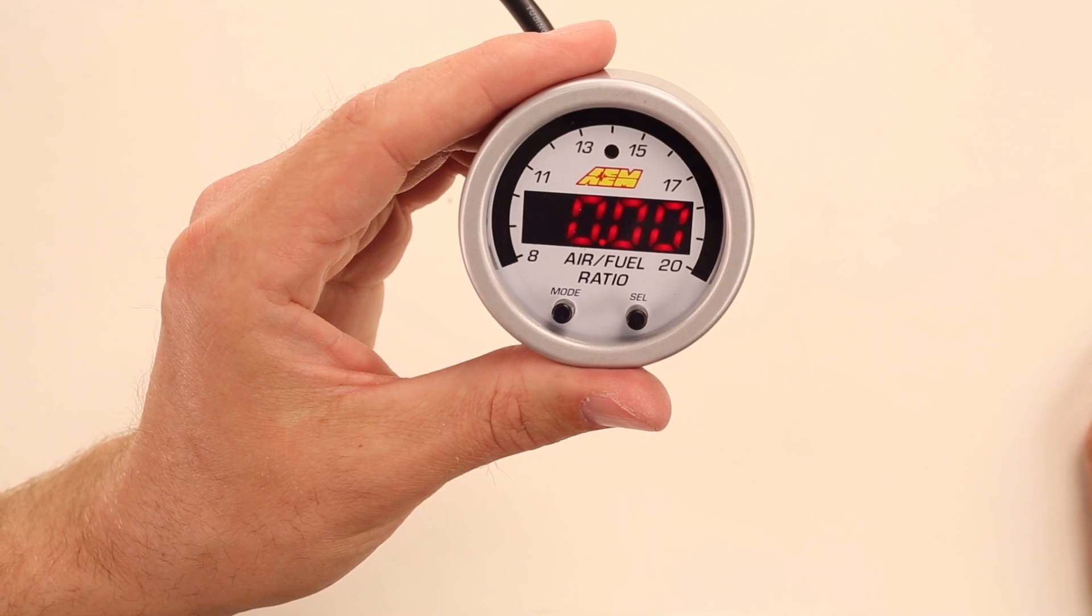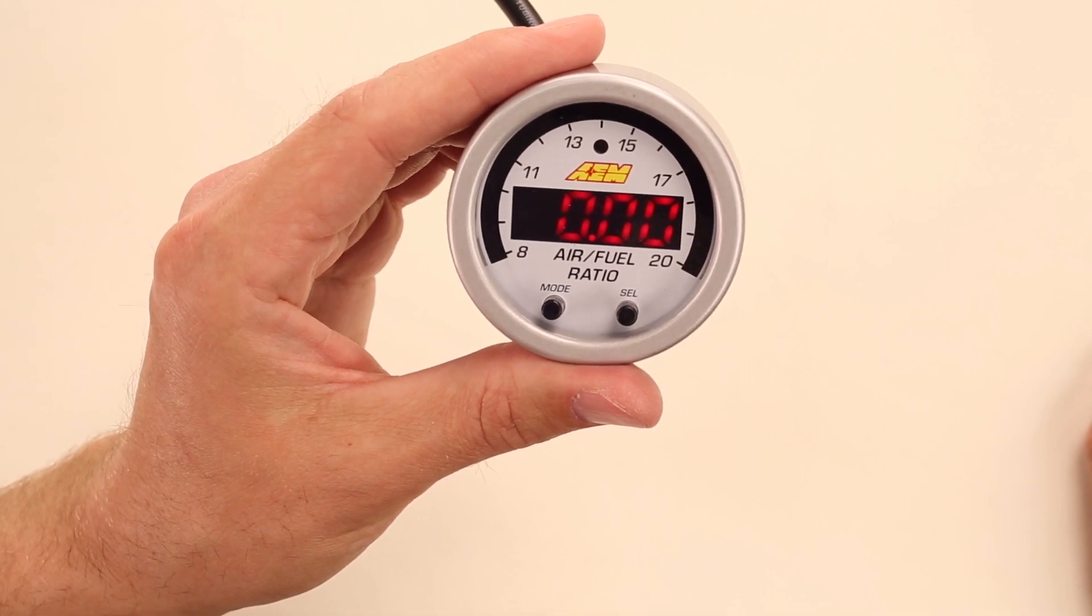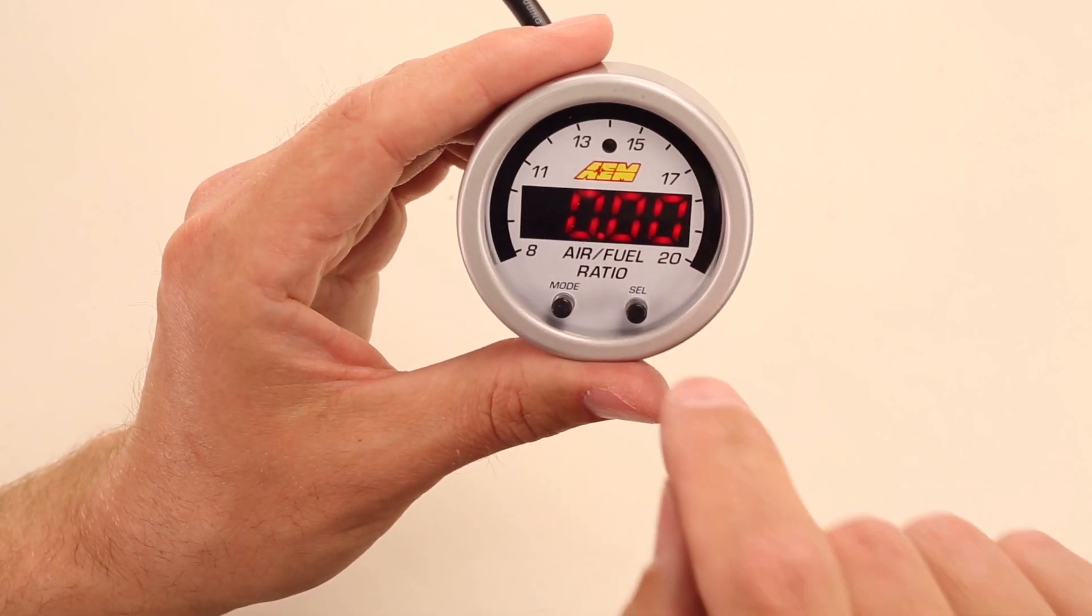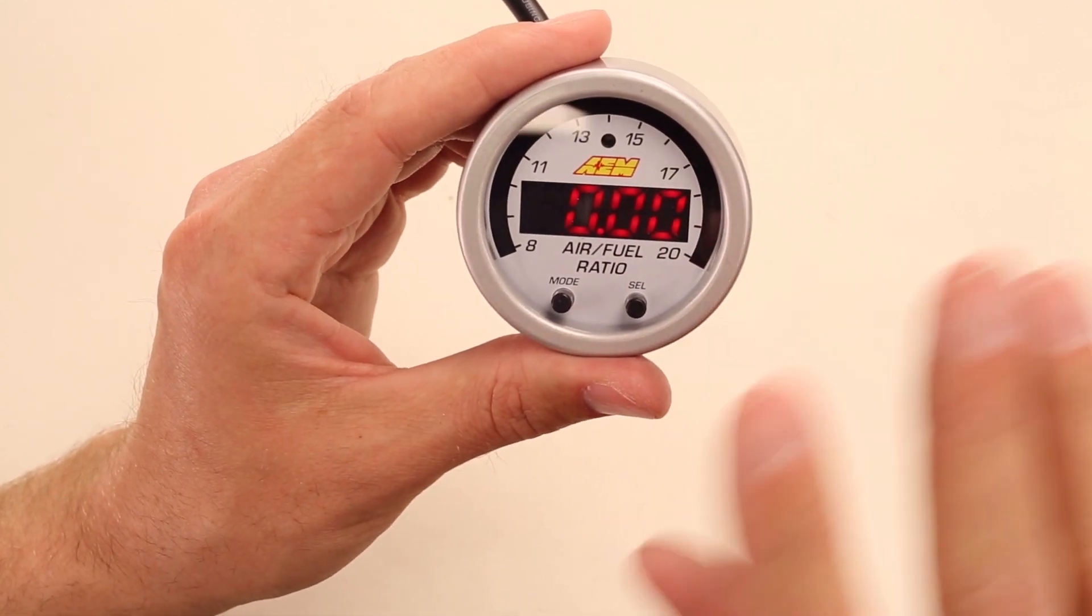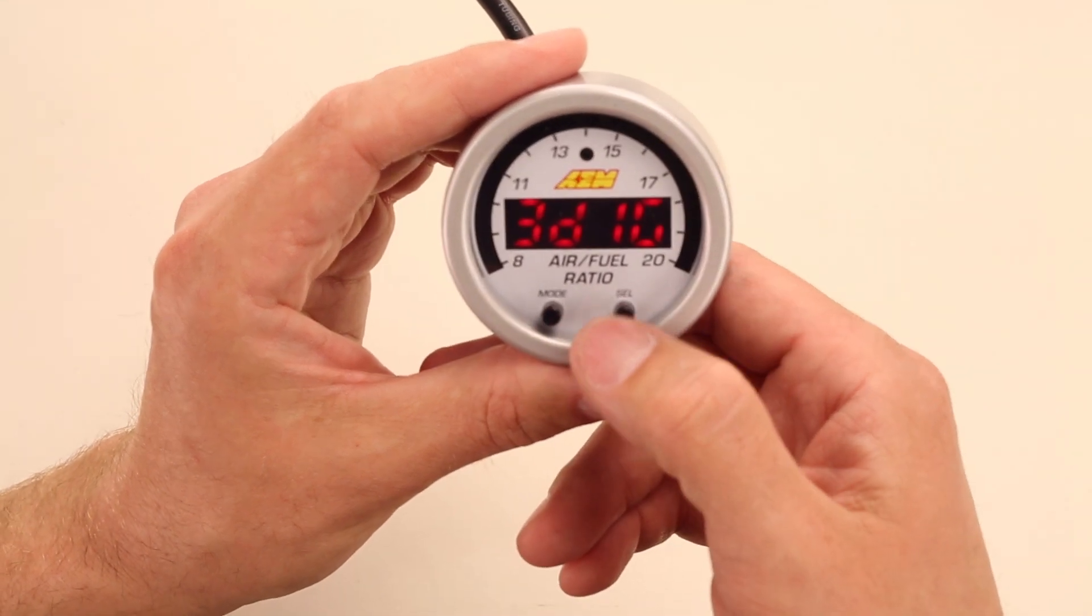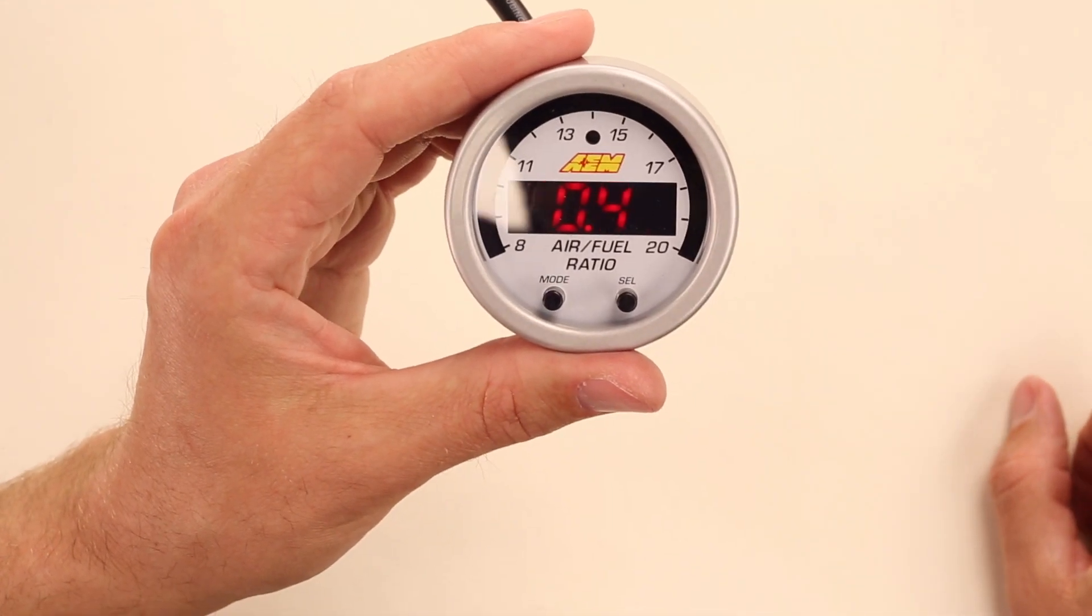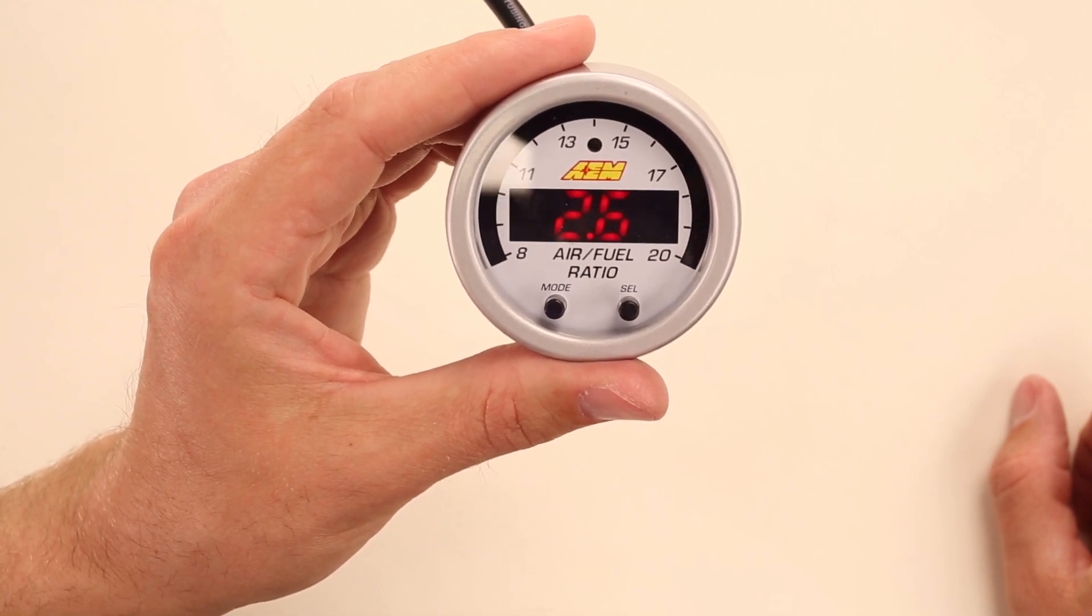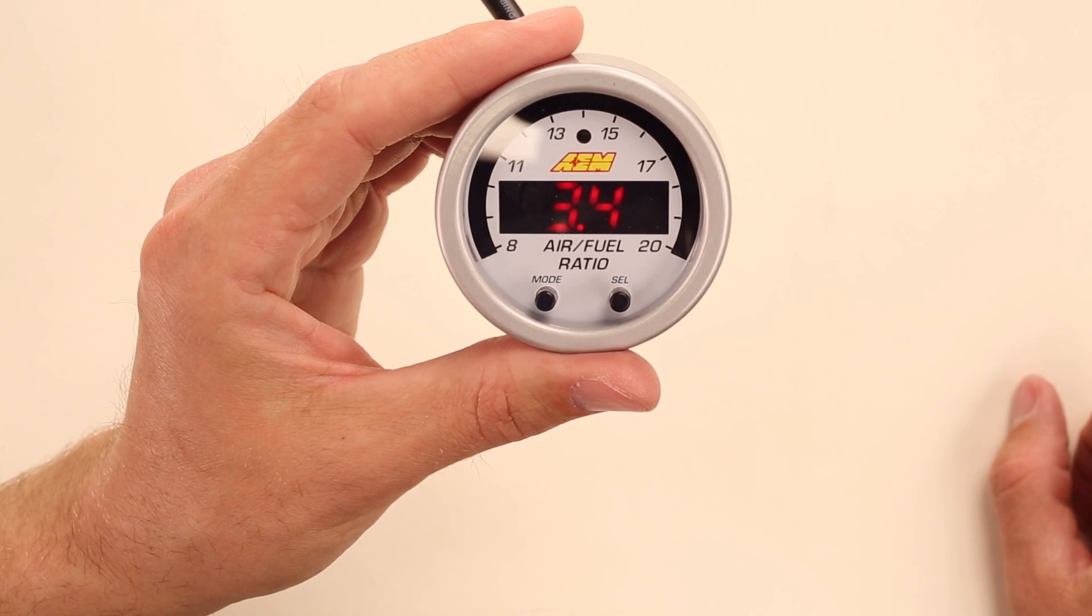And in air fuel ratio, you have two levels of precision. You have four digit, which is what it defaults to. Or if that's too precise, the numbers are moving too fast, you can switch it to a three digit readout by hitting the mode and select button. And now you'll get a little bit more of a simplified, not as much information screaming at you from the dash.